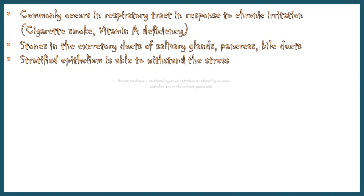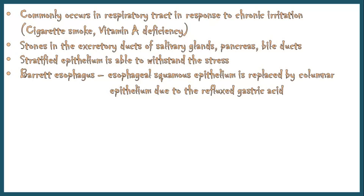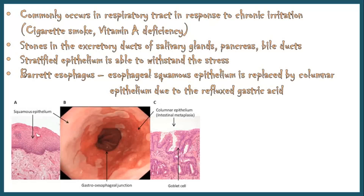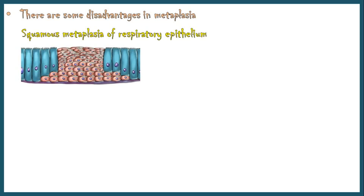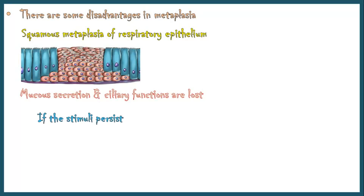In Barrett's esophagus, the esophageal squamous epithelium is replaced by columnar cells due to refluxed gastric acid. Although metaplasia enables cells to adapt to changes in their environment, there are some disadvantages. In squamous metaplasia of the respiratory tract, even though the epithelial lining becomes tough, the essential functions of respiratory epithelium like mucus secretion and ciliary functions are lost. If the stimuli that predispose to metaplasia persist for a long time, this may induce malignant transformation of metaplastic cells.